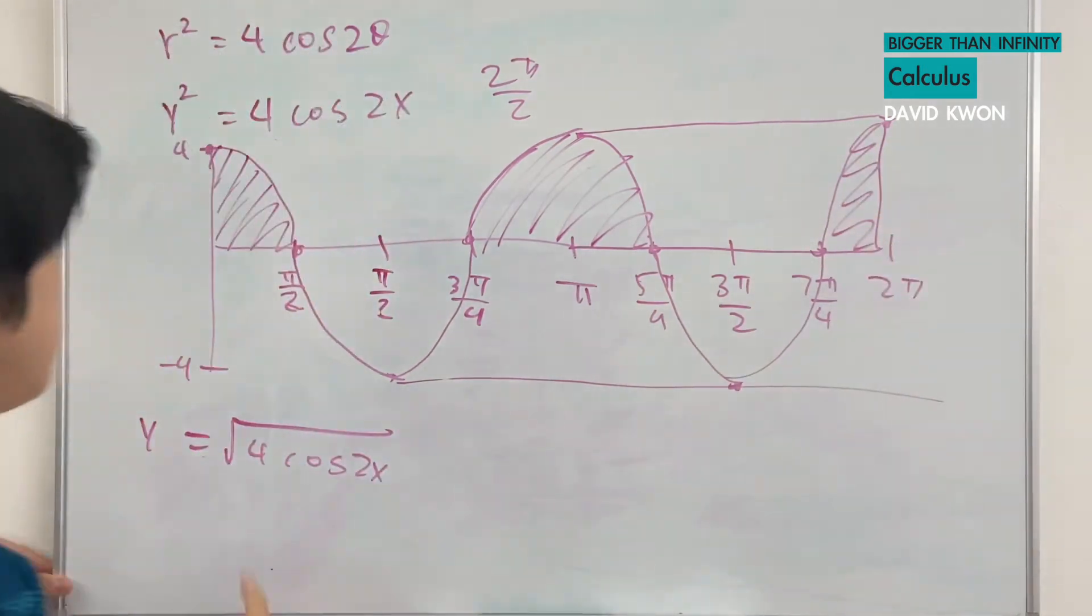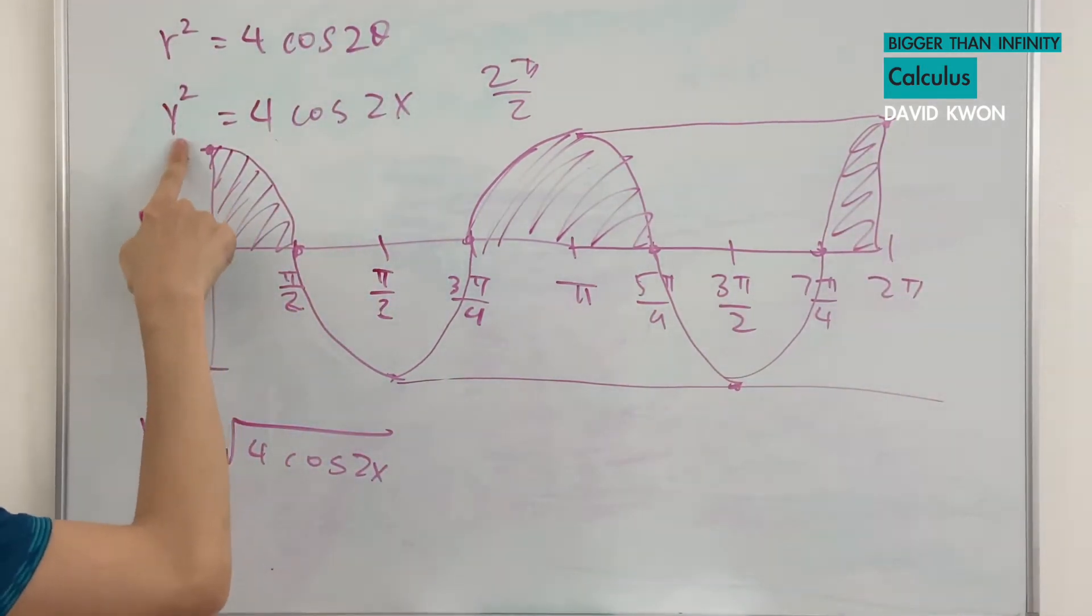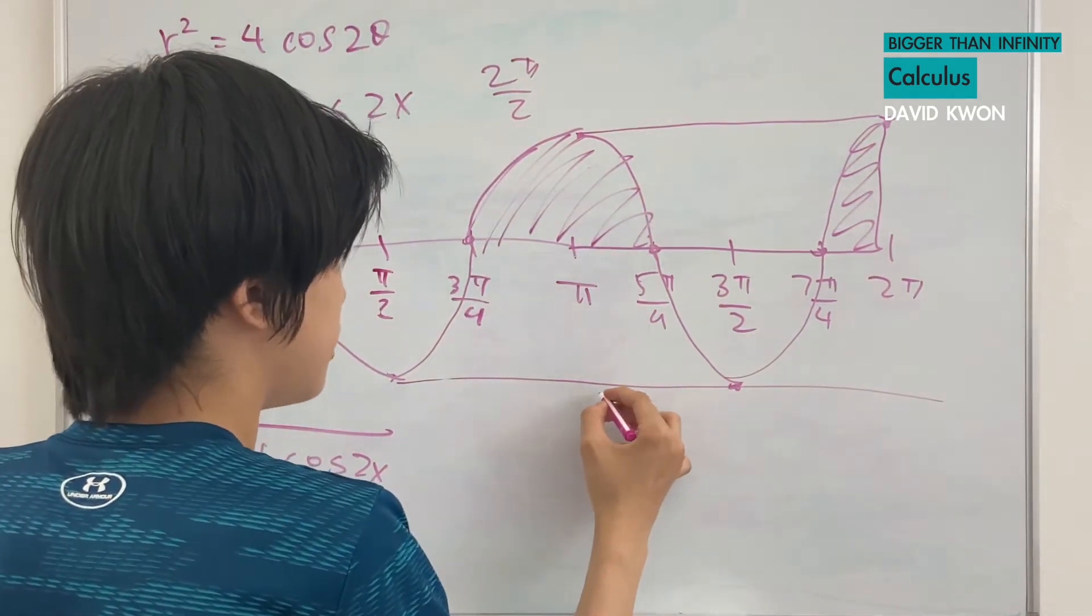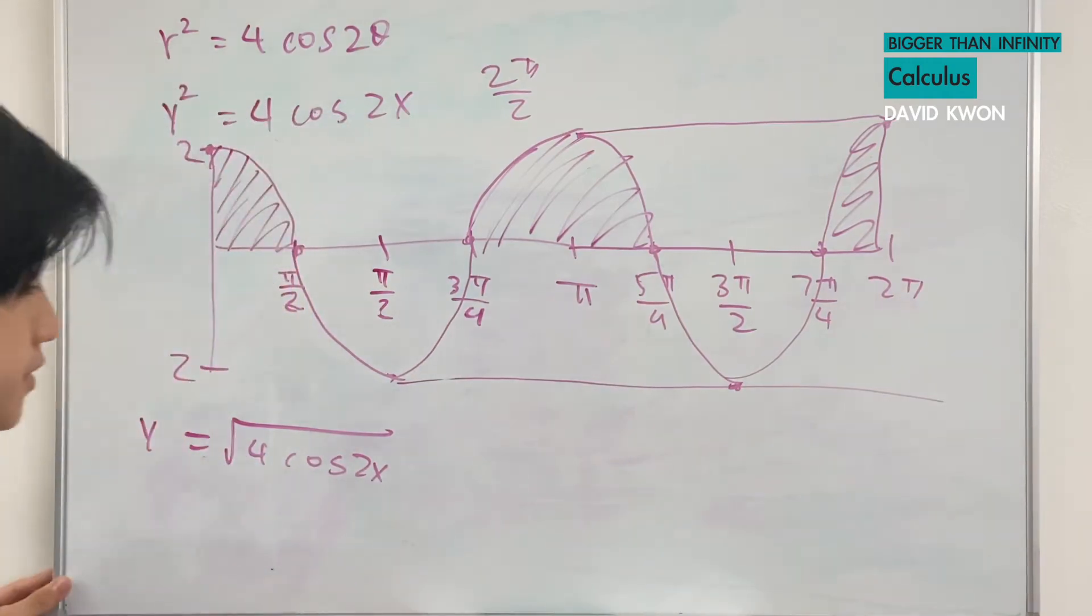And also, the 4 is going to become a 2. And this part can just ignore. And now, let's draw the polar graph version of this, right?